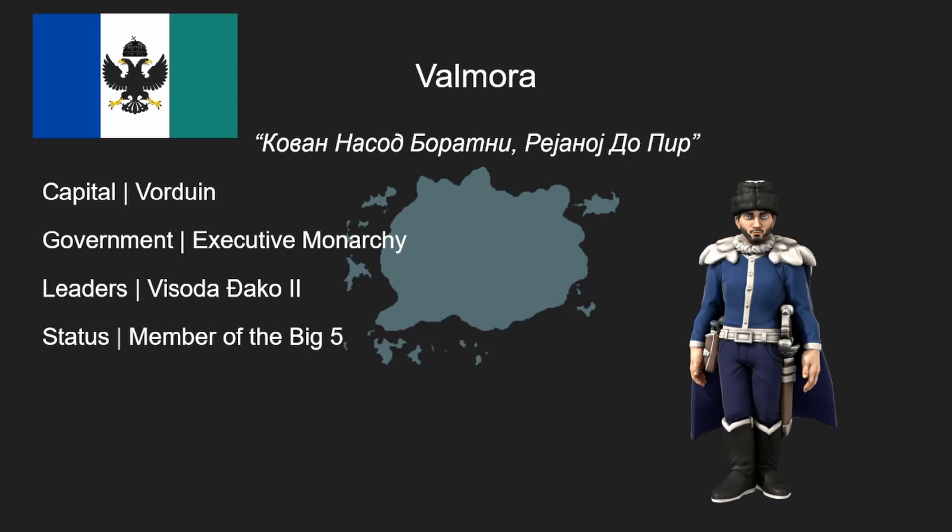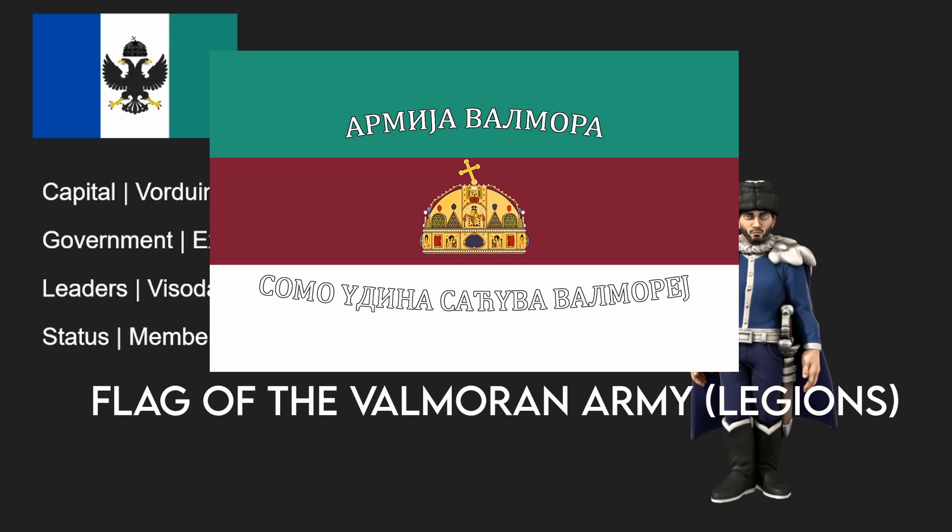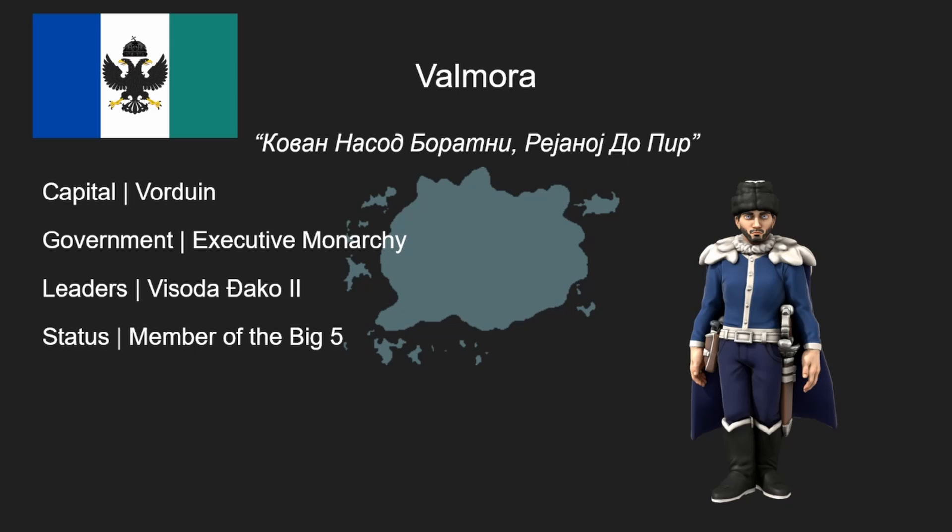What does Valmora bring to the table? Valmora has the largest army in the world among its members in the Big Five. It spends a gross amount of money from its national budget on maintaining and propping up its large army known as the Legions, which consists of thousands of soldiers each with their own storied histories depending on the battles they fought in or famous figures from their ranks. So that is Valmora.